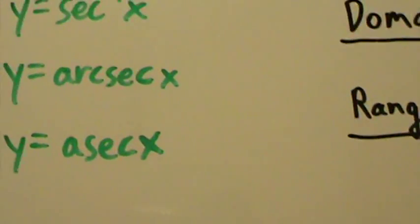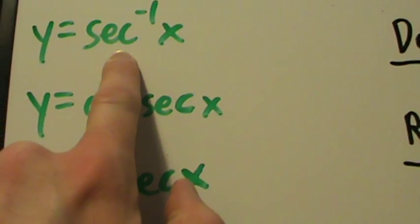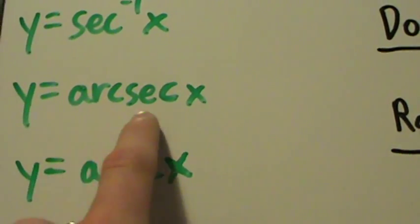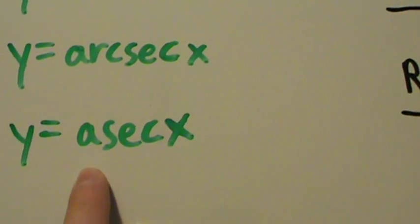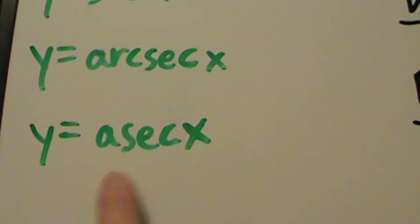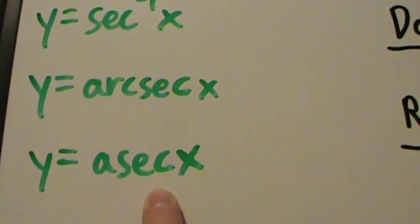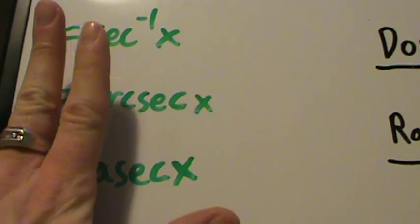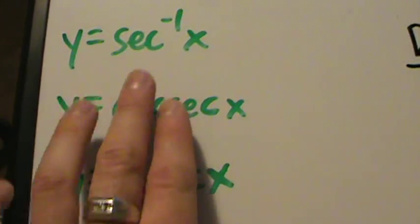Some notation: y equals secant inverse of x — with a negative one in the exponent — or we could say y equals arc sec of x, or shortened, y equals asc of x. This last one is not as common as it used to be, but people will know what you mean. Three different ways of saying exactly the same thing — the inverse secant function.